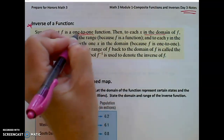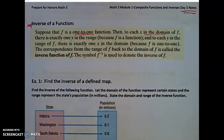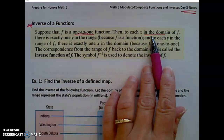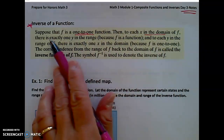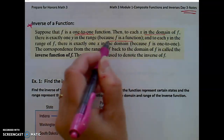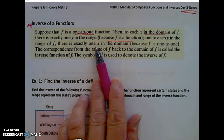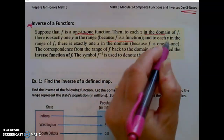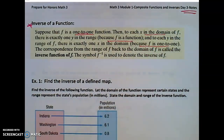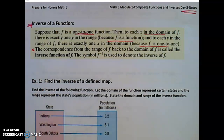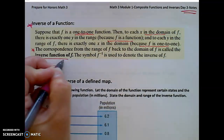If a function is 1-to-1, then it has an inverse. To each x in the domain of f, there's exactly one y in the range, because it's a function. And then to each y in the range of f, there's exactly one x in the domain, because it also goes the other way — that function is 1-to-1. This mapping, this correspondence from the range of f back to the domain of our function f, is called the inverse function of f.